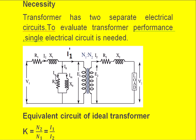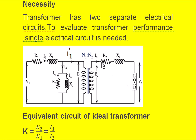The resultant of Im and Iw (or Ic) is I0. N1 is the number of turns on the primary and N2 is the number of turns on the secondary. E1 is the induced EMF in the primary winding, and E2 is the induced EMF in the secondary winding. R2 is the secondary winding resistance, X2 is the leakage reactance of the secondary winding (also represented as Rs and Xs respectively). V2 is the load terminal voltage and I2 (or Is) is the load or secondary current.